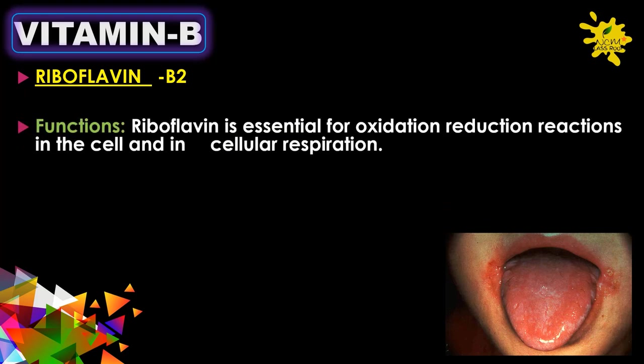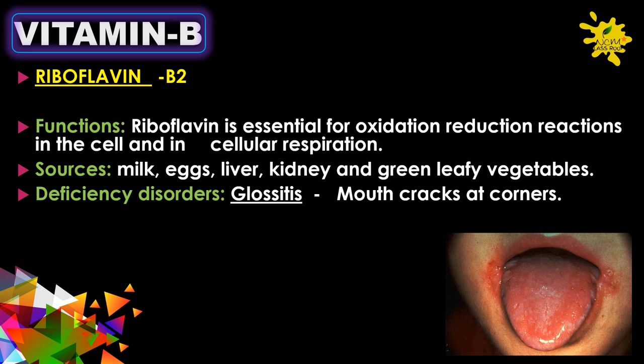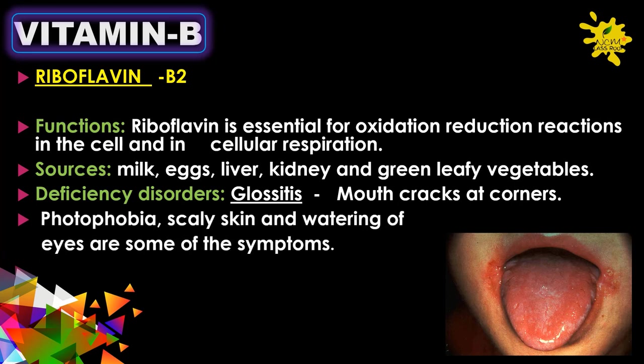Riboflavin is essential for oxidation-reduction reactions in the cell and in cellular respiration. Sources include milk, eggs, liver, kidney, and green leafy vegetables. Deficiency disorders include glossitis, mouth cracks at corners, photophobia, scaly skin, and watering of eyes.